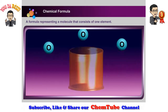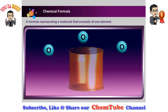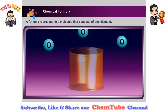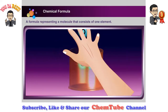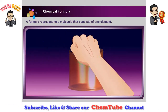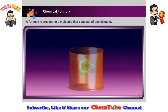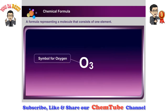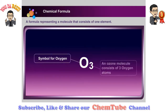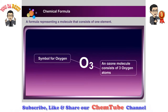Let's look at another example. Catch the oxygen atoms and drop them in a jar. Click on the jar. This newly formed molecule is known as ozone. One molecule of ozone consists of three atoms of oxygen.